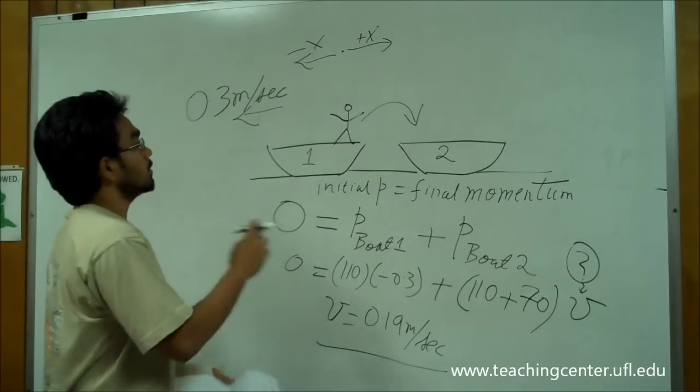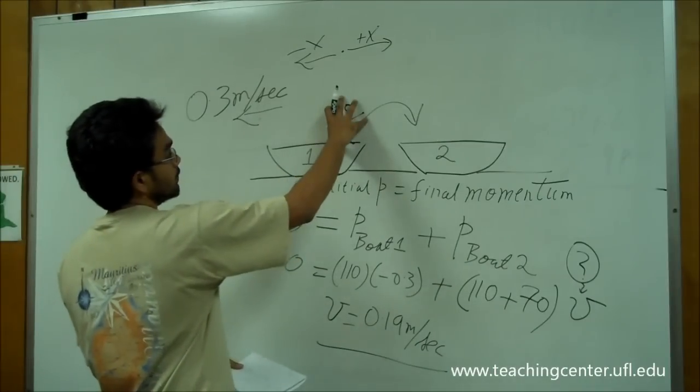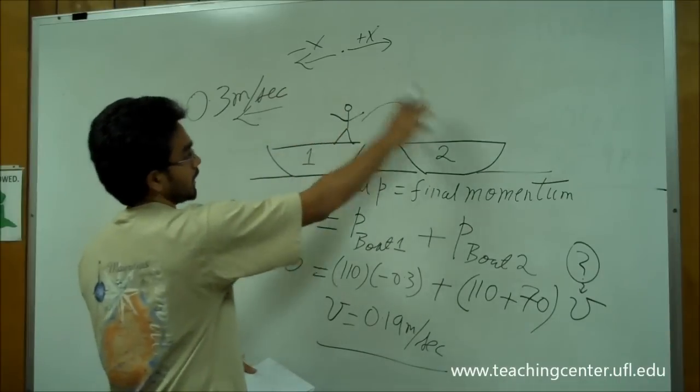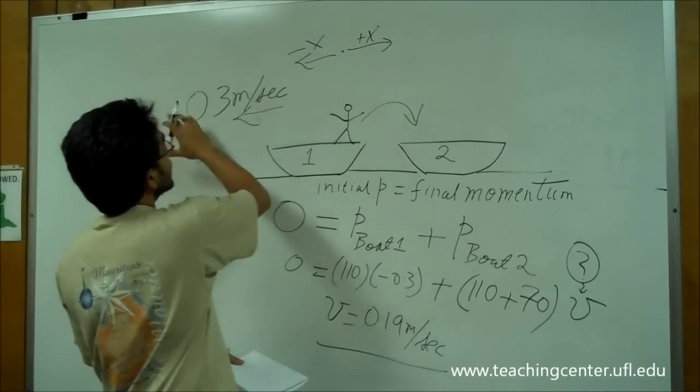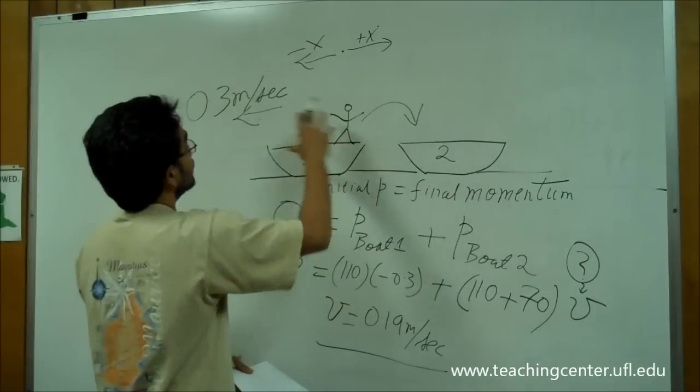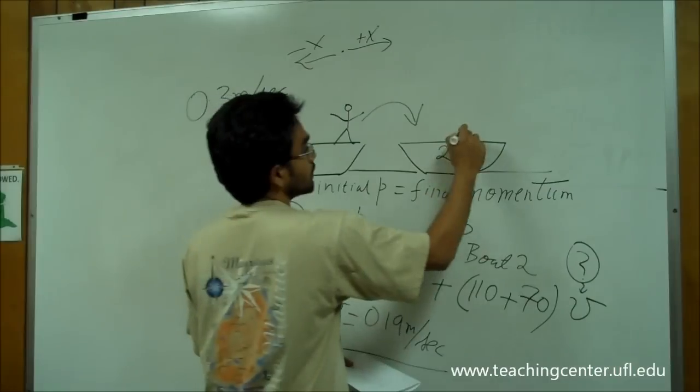Okay? So, let's do a recap. So, what happened was, there was a man here on the first boat, and he jumped from the first boat to the second boat. Initially, both the boats were at rest. Then, when the man started moving, jumped, the first boat started moving in this direction, and the second boat moved in that direction.